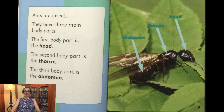Ants are insects. They have three main body parts. The first body part is the head. The second body part is the thorax. The third body part is the abdomen.